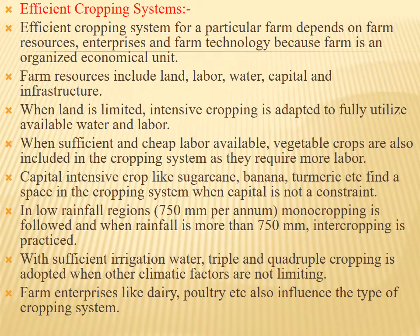An efficient cropping system for a particular farm depends on farm resources, enterprises, and farm technology, because a farm is an organized economical unit. Farm resources include land, labor, water, capital, and infrastructure.